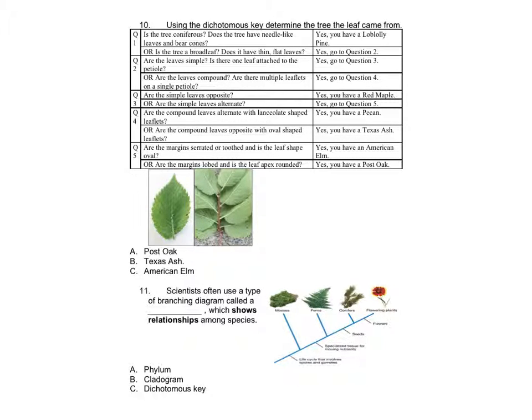Question 4: Are the compound leaves alternate with lance-like shaped leaflets? Yes, you have a pecan. Or are the compound leaves opposite with oval-shaped leaflets? Yes, you have a Texas Ash. Question 5: Are the margins serrated or toothed and is the leaf shaped oval? Yes, you have an American Elm. Or are the margins lobed and is the leaf apex rounded? Yes, you have a Post Oak.